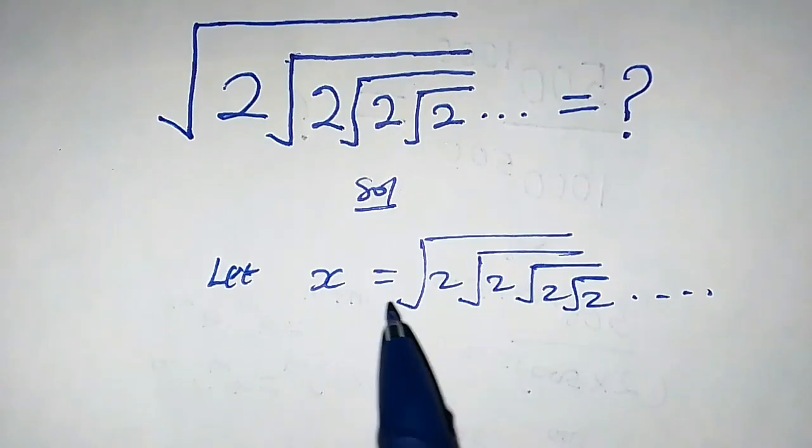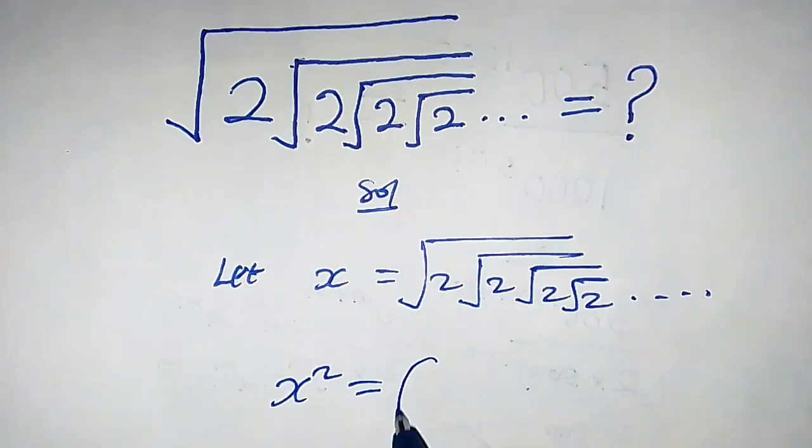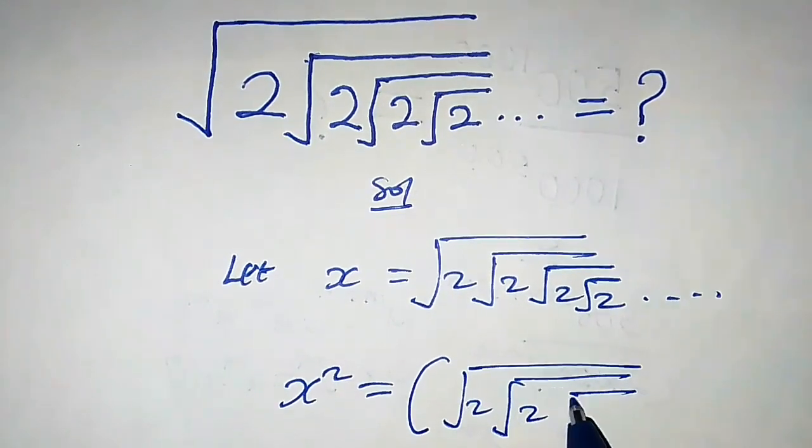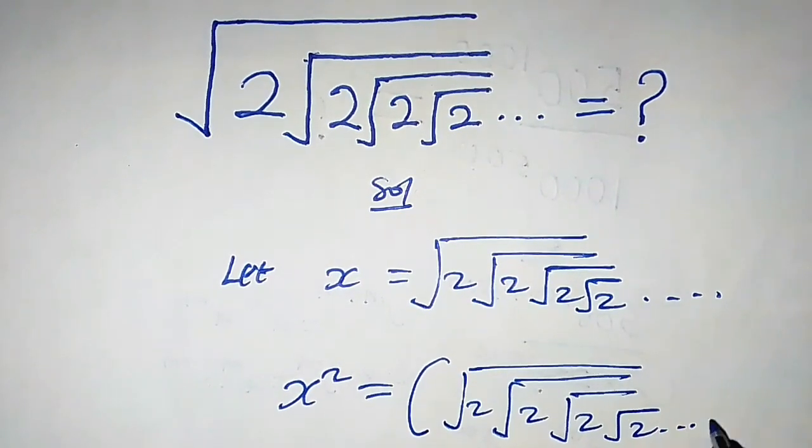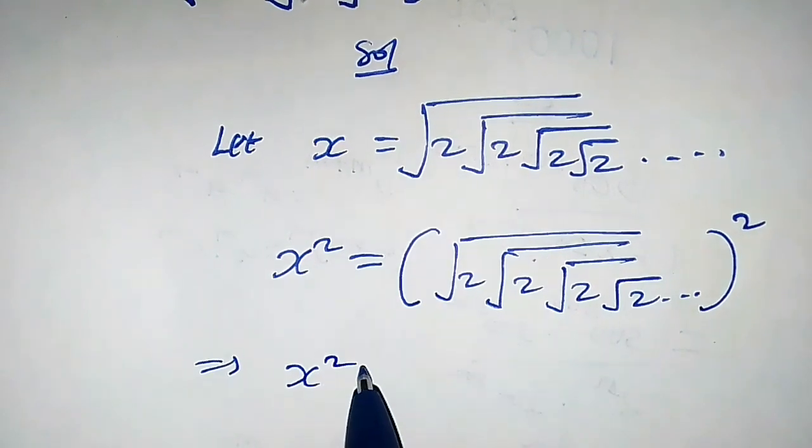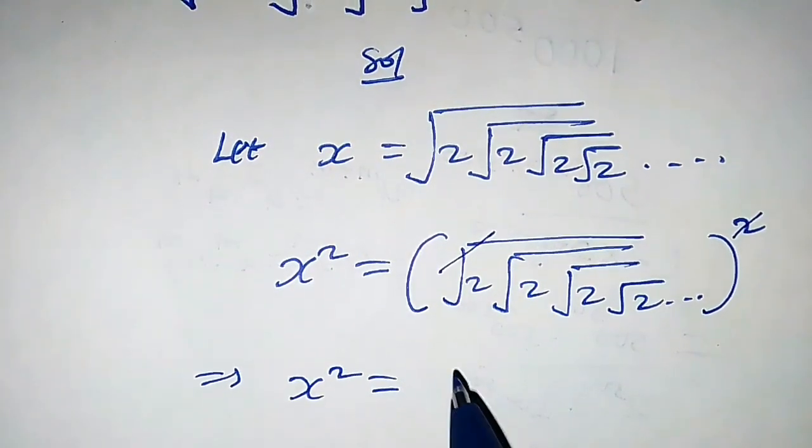Let's take the square of both sides, so we're gonna have x squared equals square root of 2 times square root of 2, square root of 2, square root of 2, and so on, squared. This implies that x squared equals—clearly this bigger square root here of these two—so we are left with 2 times square root of 2, square root of 2, square root of 2, and so on.